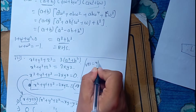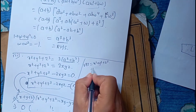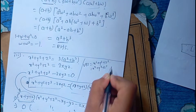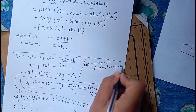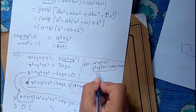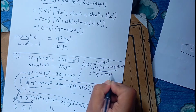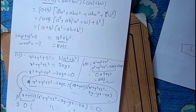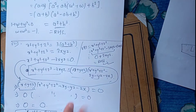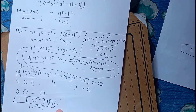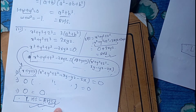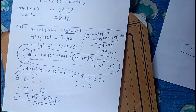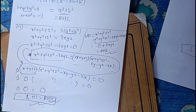LHS equals x cubed plus y cubed plus z cubed plus z cubed. This formula equals minus 3xyz plus 3xyz, which equals 0. I will explain that LHS equals RHS. I am going to explain the complex number. I will be able to practice the question. Please comment on this question. Thank you.